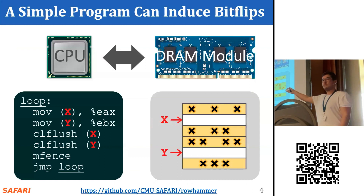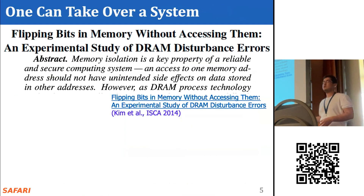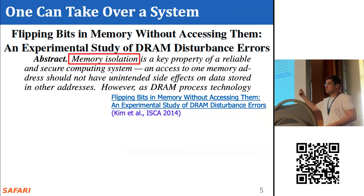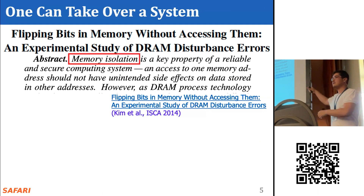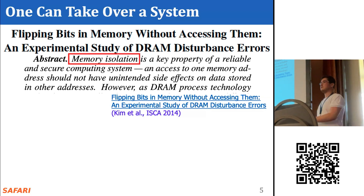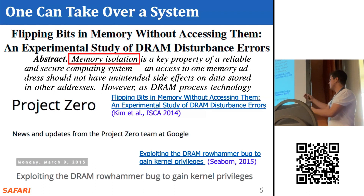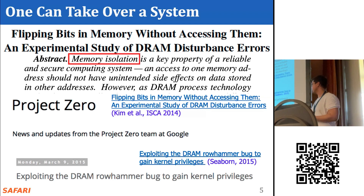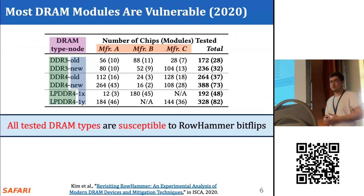We call this the RowHammer phenomenon. We refer to the rapidly opened and closed row as the aggressor row and the rows that contain bit flips as the victim rows. A simple program can induce these bit flips in main memory. Prior work has shown that RowHammer is a widespread phenomenon affecting many DRAM chips from many different vendors. This breaks memory isolation, which is a key property of secure and reliable systems. Many prior works have shown that RowHammer can be used to take over systems, and many newer DRAM chips are also vulnerable.